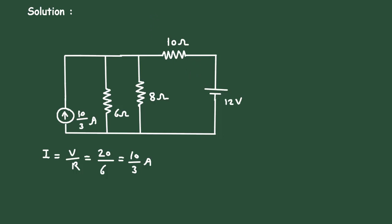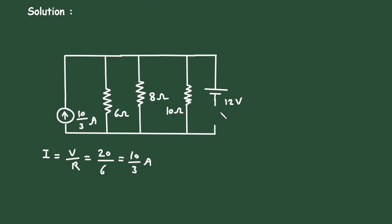Here also we can do the same. Currently this 10 ohm is in series, so it will be in parallel, and the resistance value will remain the same, that is 10 ohm. This voltage source will be converted into its equivalent current source. The direction of this current source will be according to the polarity of this voltage source. I = V/R. The value of voltage is 12 and the value of resistance is 10, so it will be 1.2 ampere.